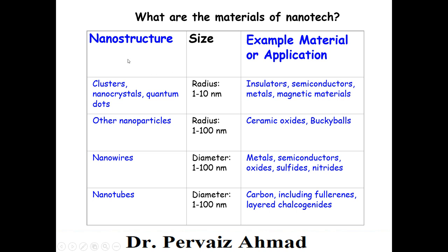In nanostructures, we have clusters, nanocrystals, and quantum dots. These kinds of materials have a radius in the range of 1 to 10 nanometers. Practical examples include insulators, semiconductors, metals, and magnetic materials. These are examples of nanostructure materials which include clusters, nanocrystals, and quantum dots.